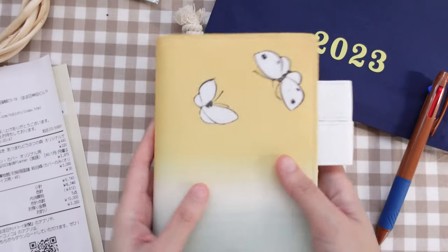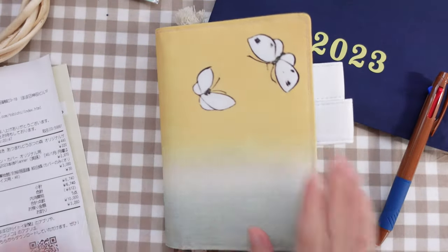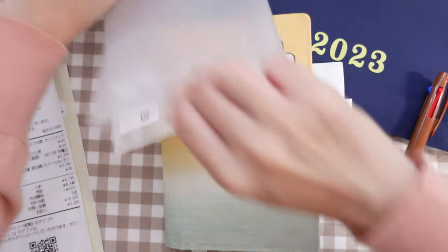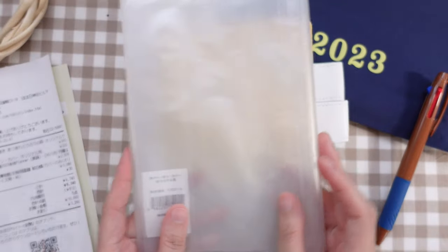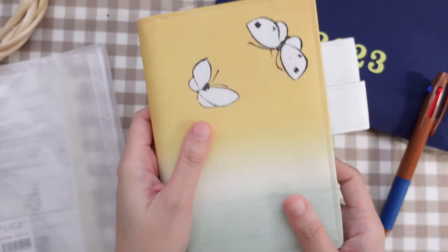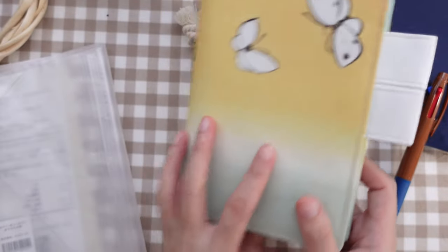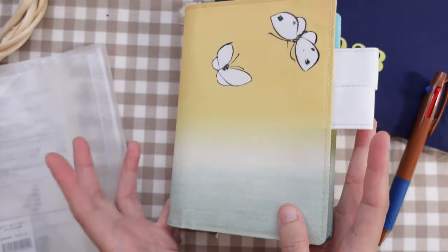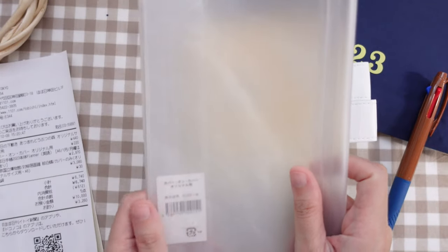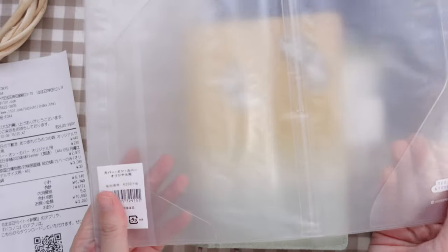And let's go back to the cover. So I did not stop with the cover. I also got myself a cover-on-cover because, as you can see, the color is very light, and I'm pretty sure that if I carry this around, especially at school, it's going to get chalk. It's going to get dusty. So I really wanted to get a cover-on-cover for that purpose.